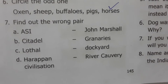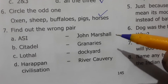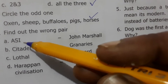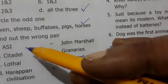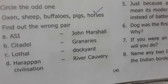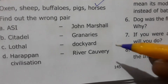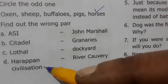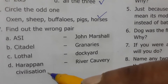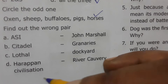Find out the wrong pair. ASI - Archaeological Survey of India - was founded under the guidance of Alexander Cunningham and later Sir John Marshall revealed Mohenjo-daro and Harappan civilization. Citadel is the highest area, not just the granary. Lothal is the dockyard. Harappan civilization is situated in Afghanistan and Pakistan region - river Kaveri is found in Tamil Nadu, so that would be the wrong pair and is the correct answer.